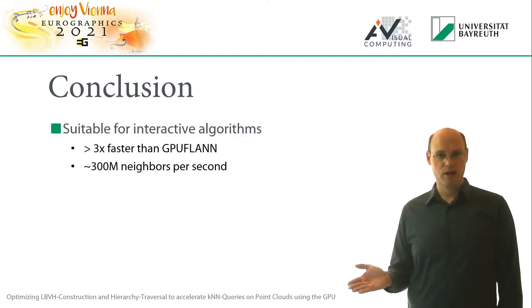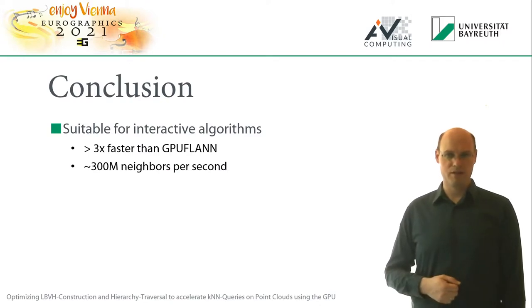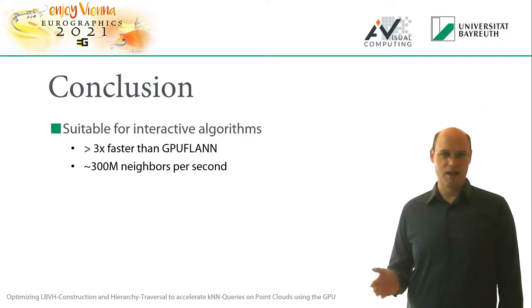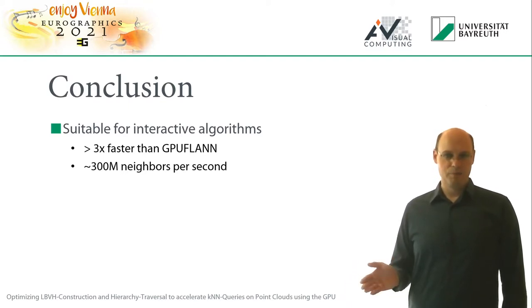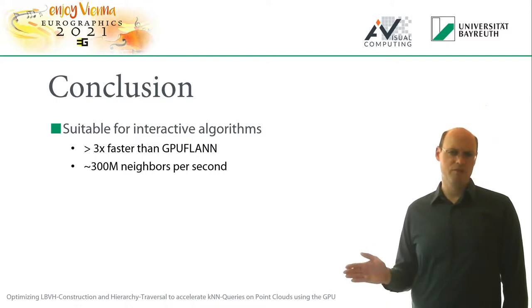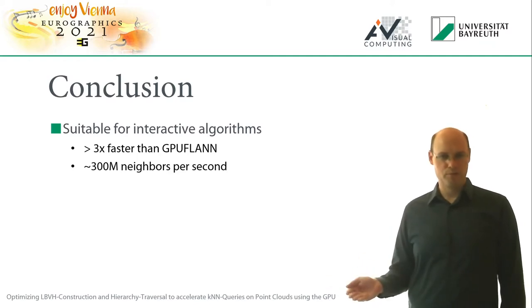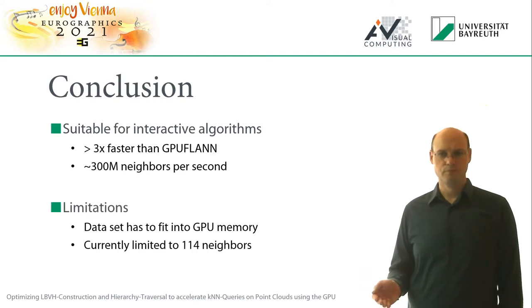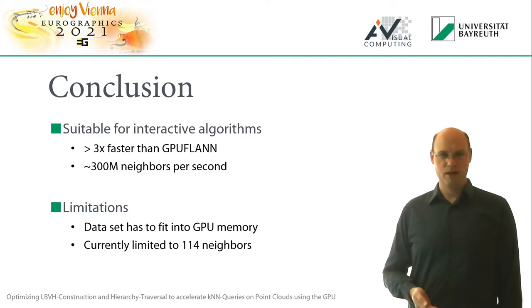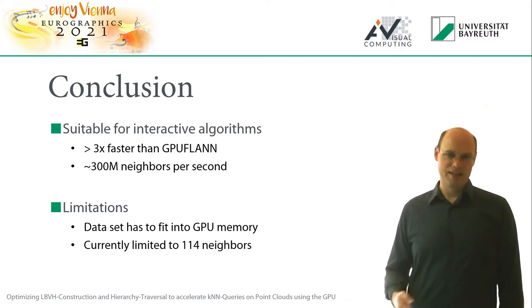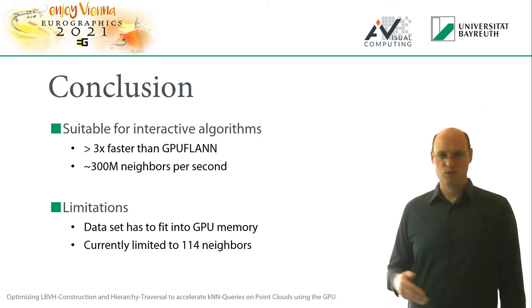To conclude, our optimized GPU-based KNN method is suitable for interactive algorithms like online point cloud registration. It is able to compute approximately 300 million neighbors per second, or in other words, 10 million queries per second with a k of 32. The main limitation is that the dataset needs to fit into GPU memory, but this could be solved by partitioning the point cloud into overlapping blocks. Currently, it is also not possible to use a k greater than 114 due to compiler problems, but we hope that this will be solved in the future.